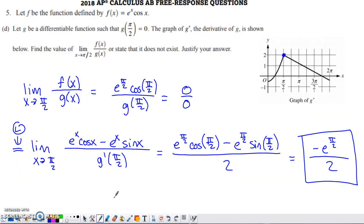And then the last part of this is kind of weird because they start talking about this new function g. They tell us g is differentiable and g of pi by 2 is equal to 0. And then for some reason they provide us with a graph of g prime. What they want us to do is evaluate this limit. So x is approaching pi by 2. The function inside the limit is f of x, which we've been dealing with all problem long so far, divided by g of x, which is something that's new to part d, or state that it doesn't exist. Justify your answer.